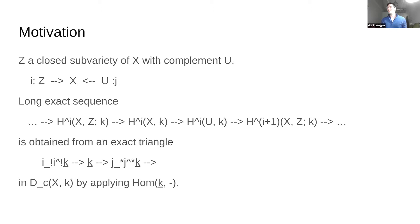Here's another example of something about cohomology encoded in the constructible derived category. We have long exact sequences associated to closed subvarieties of algebraic varieties, comparing the cohomology of the ambient variety, the cohomology of the complement, and the cohomology supported on the closed subvariety. This is just one of the first things you learn in an algebraic topology class. The claim is that this is also encoded in a precise way in a statement about the constructible derived category.